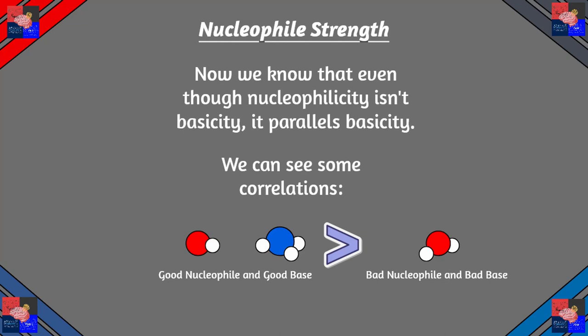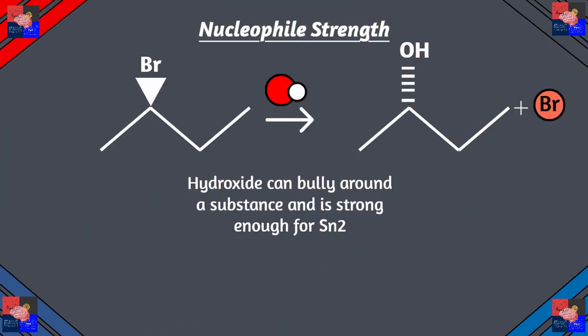Now we have to go to the second thing we need to determine, which is divided into two parts. First is nucleophile strength. We know from our elimination reaction video that nucleophilicity parallels basicity, and even though this isn't always the case, we can see some correlation — like how hydroxide is a stronger base than water and therefore a stronger nucleophile, and how ammonia is stronger than water.